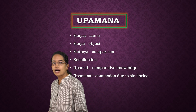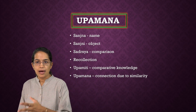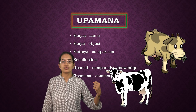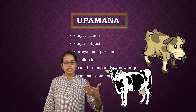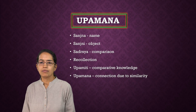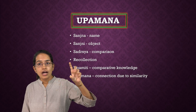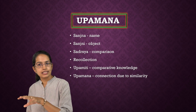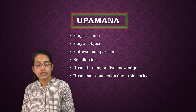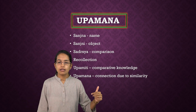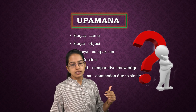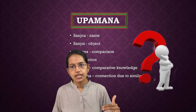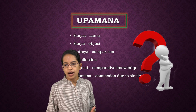The next is Upamana, which is a kind of comparison. Let's say you see an animal similar to a cow — you compare it to a cow. Under this you have six tips that are important. Under Anumana, the knowledge derived is Anumiti. Under Upamana, the knowledge derived is Upamiti. Sanjnaa is the name, Sanjni is the object, Sadrisha is the comparison. Then you have recollection, Upamiti, and finally the Upamana.